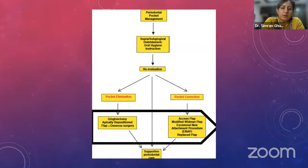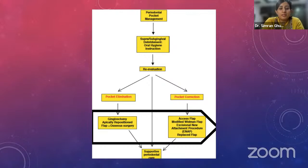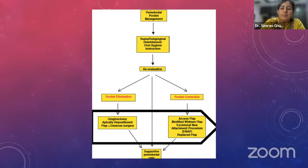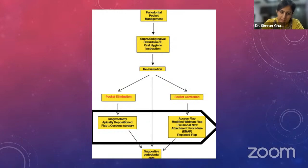Once the periodontal pocket is established, phase one therapy always remains the standard: we perform supra- and subgingival scaling and root planing, give the patient oral hygiene instructions, and reevaluate after a few weeks. If proceeding toward pocket elimination, we perform gingivectomy, apically repositioned flap, or other forms of treatment. If we want to reduce the pocket, we perform surgeries like the modified Widman flap. After these are done, we move to supportive periodontal care, which is the maintenance phase.